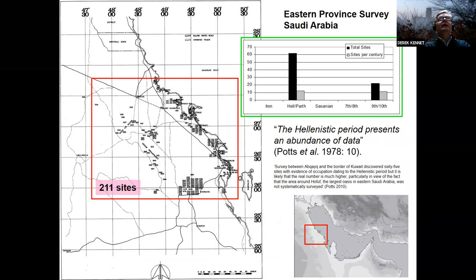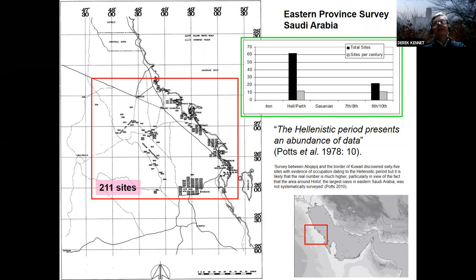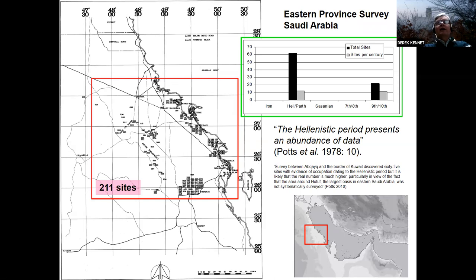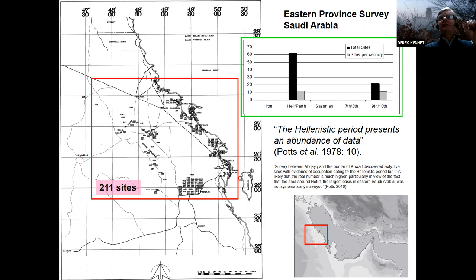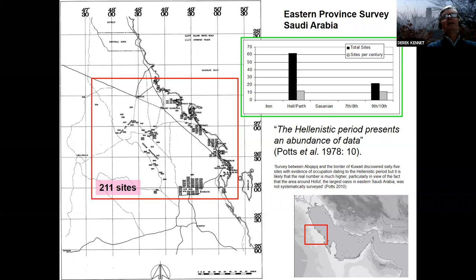Going back to Dan Potts's work at the Eastern Province Survey, we have comments like 'the Hellenistic period presents an abundance of data.' I think it's fair to say that nobody's understanding of the chronology of the glazed wares at that time was as clear as it is now — so some sites he found might be a little bit later — but on the whole I think he's right and this evidence holds up. We are seeing in the Eastern Province a very marked increase in activity. And a lot of it — importantly — consists of small sites. It's not just the big sites like Taj and Faileka, but a lot of these small rural sites popping up at this time, and that's a really important point.